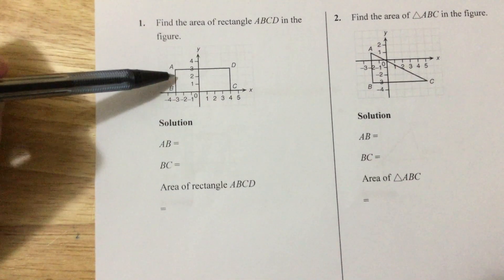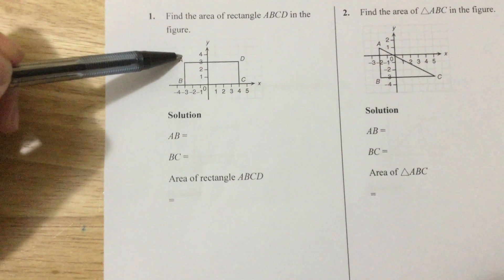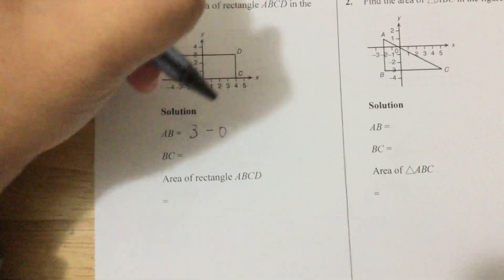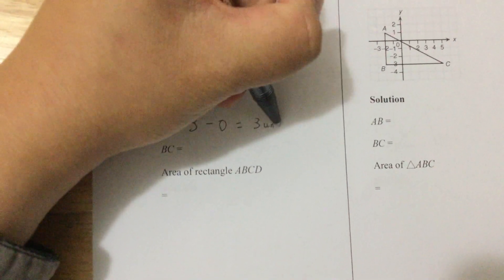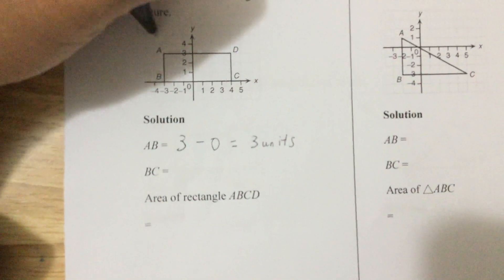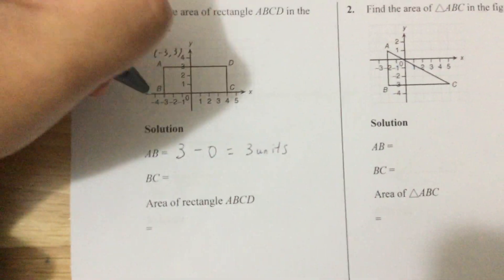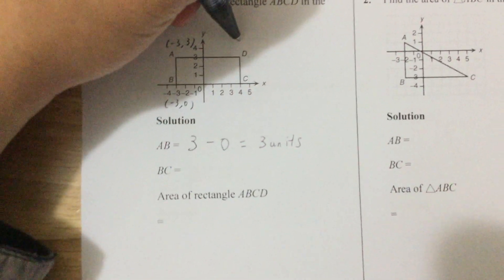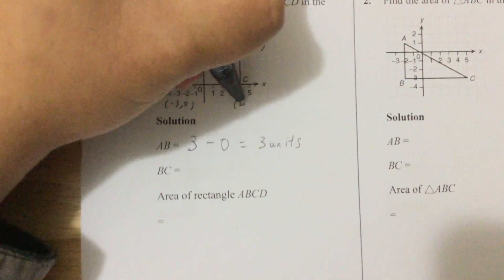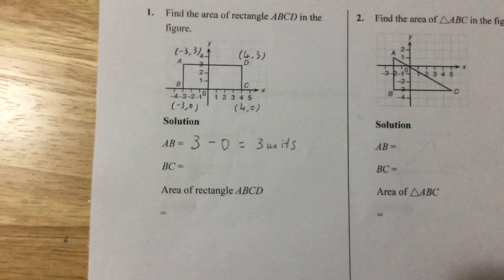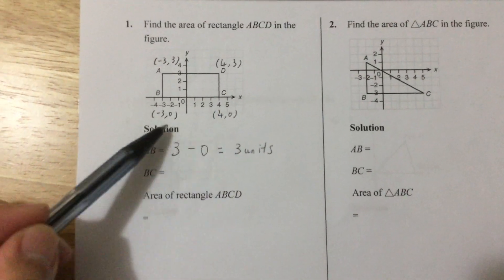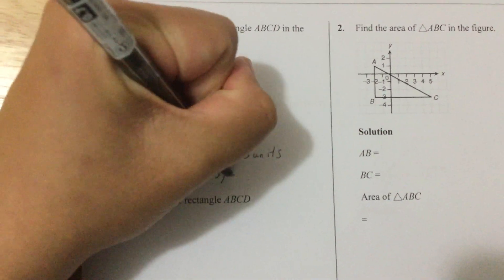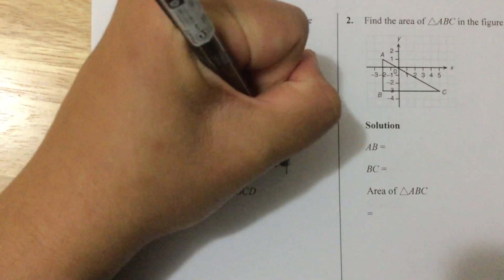Now I'm going to calculate. For AB, you will see A is at negative 3, 3 and B is at negative 3, 0. So that is 3 minus 0, which is 3 units. For the right-hand side, if you want to calculate CD, this is okay. Because C is at 4, 3 and D is at 4, 0. For BC, it's 4 minus negative 3, because the y-coordinates are equal. So you have 4 plus 3, that is 7 units.